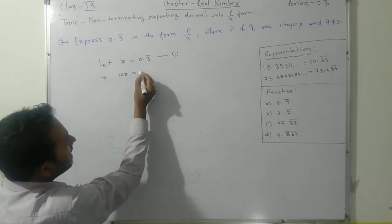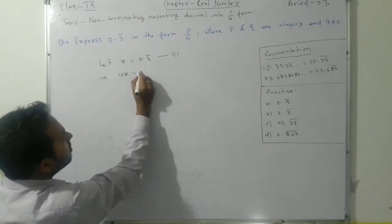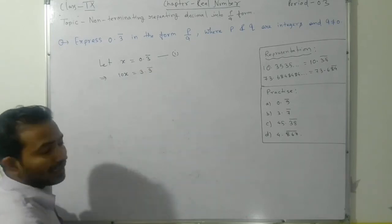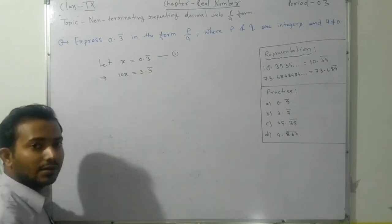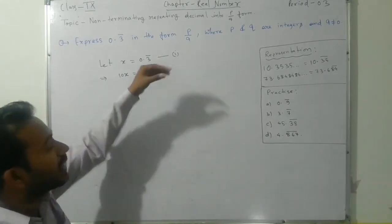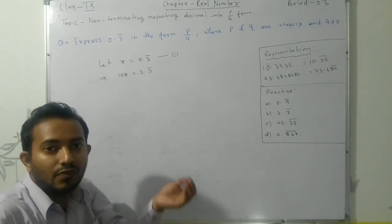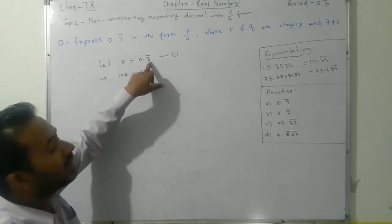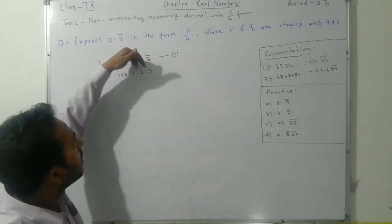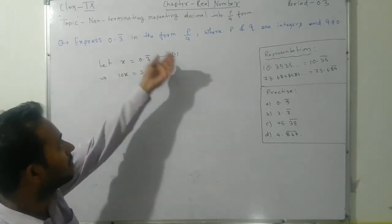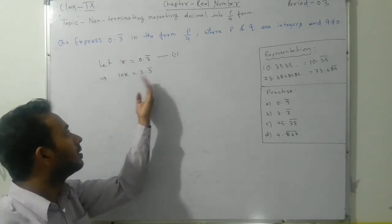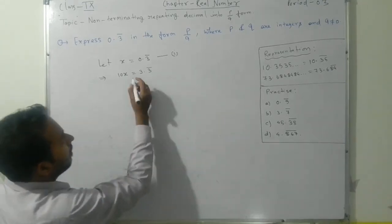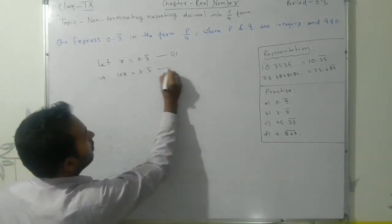If you multiply by 10, one 3 will shift to this side giving us 3, and the decimal part will remain the same. Why? Because if we take one number from an infinite repeating sequence, it remains infinite. The 3 is repeating infinitely, so taking one 3 and bringing it to this side will not affect the result. This gives you 3.3 bar.